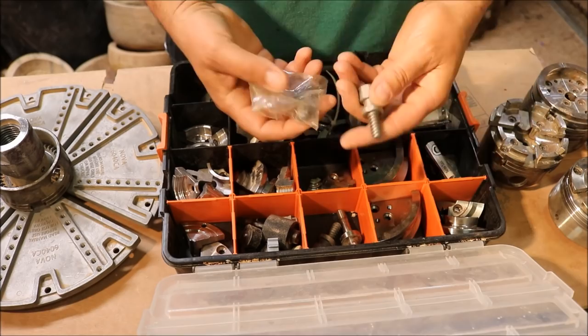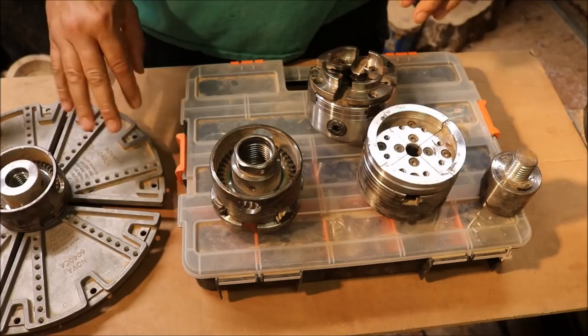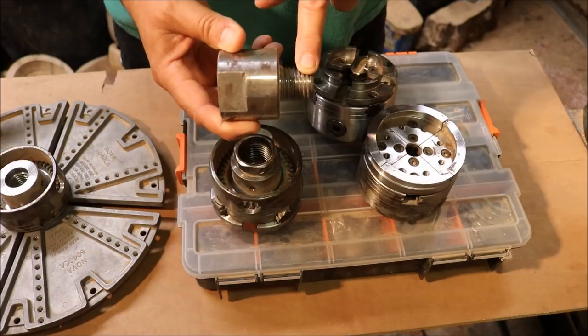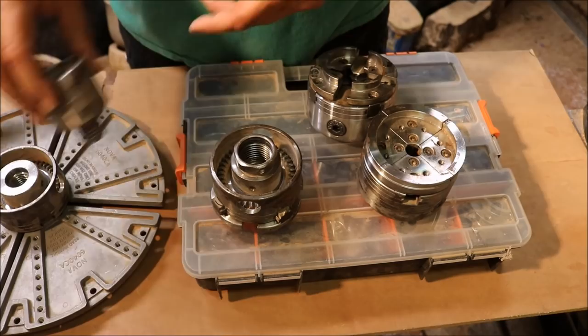Some of my jaws are from my old lathe which was a 1 inch 8 TPI. So I have a spindle reducer which goes from 1-8 TPI to 1.25 TPI. So this will end up just screwing into here like so. And then I'll put it on my lathe. Some of my face plates are the same way.